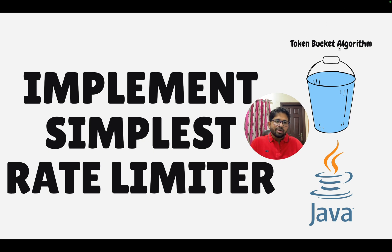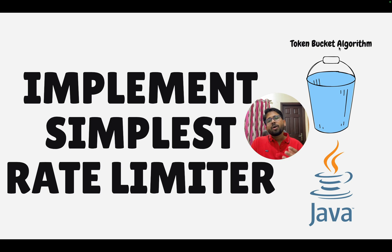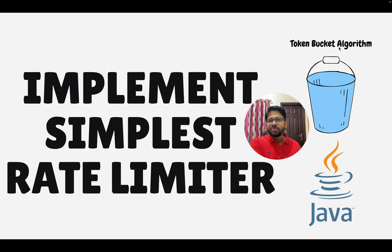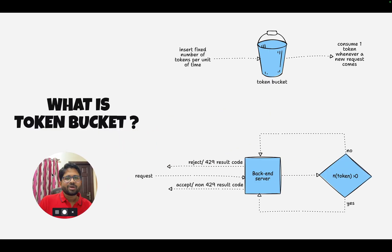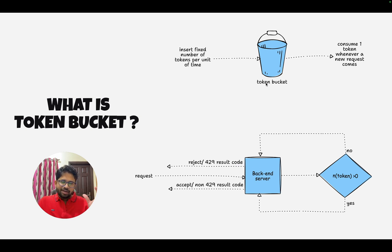For that, we'll use the most common algorithm, which is the token bucket algorithm. The reason for it being very popular is because it's very simple to use and it does not consume a lot of your resources. It should not happen that your rate limiter itself starts to consume 80% or 50% of your RAM and CPU usage. It should be very simple. Now let me talk about what a token bucket is — first understand it theoretically and then we'll see how it works in the code.